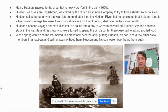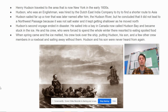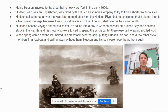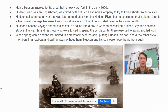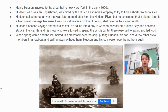Hudson's second voyage ended in disaster. He sailed into a bay in Canada, now called Hudson Bay, and became stuck in the ice. He and his crew were forced to eat spoiled food, and they were forced to spend the whole winter there. When spring came and the ice melted, his crew took over the ship, putting Hudson, his son, and a few other crew members in a rowboat and sailing away without them. Hudson and his son and the other people left on that small boat were never heard from again.